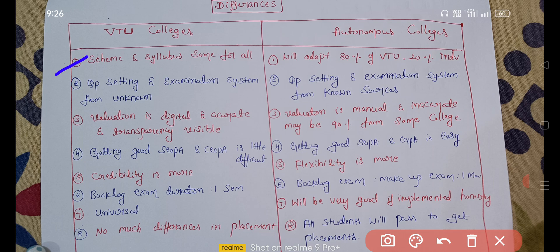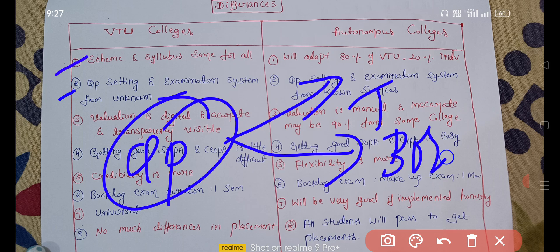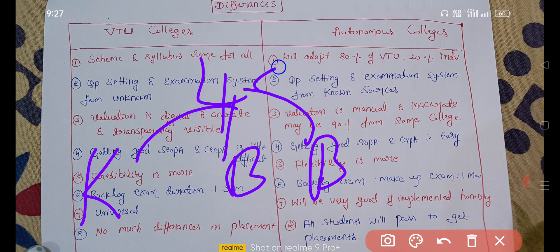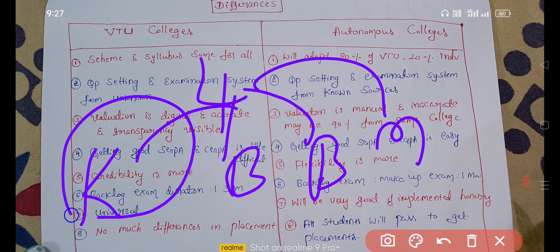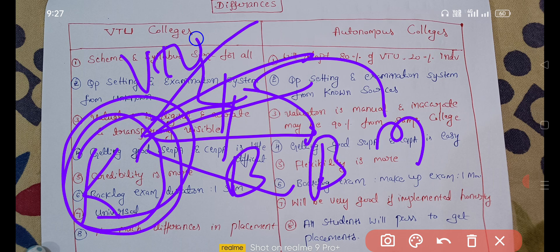The second point is about the question paper setting and examination system. In VTU, the question paper is set by an unknown person from unknown sources — not from your college. The examination system under VTU in Karnataka is divided into 4 regions: Kalburgi region, Belgavi region, Bangalore region, and Mysore region.